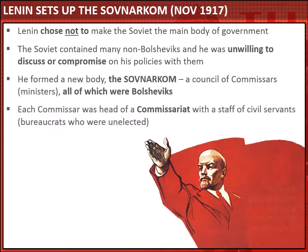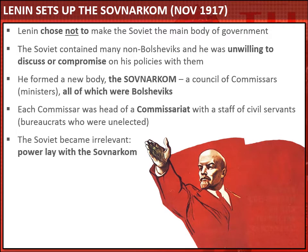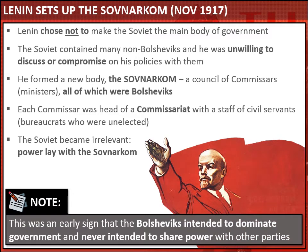Each of these commissars was head of a commissariat — a department with a staff of civil servants or bureaucrats who were unelected, appointed to carry out day-to-day business in that particular area. The Soviet, meanwhile, became increasingly irrelevant and met less and less frequently. Real power lay with the Sovnakom, which usually met once or twice a day to take decisions and govern the country. We already have an early sign that the Bolsheviks intended to dominate government and had no intention of sharing power with other parties.